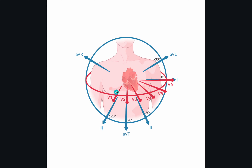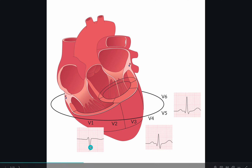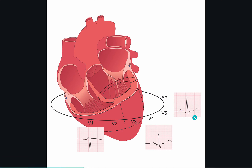V1 is placed right parasternally, and V6 is placed in the left axilla. One thing you should know about R-wave progression is that it's all about the QRS complexes, which are the electrical activity of ventricular depolarization.